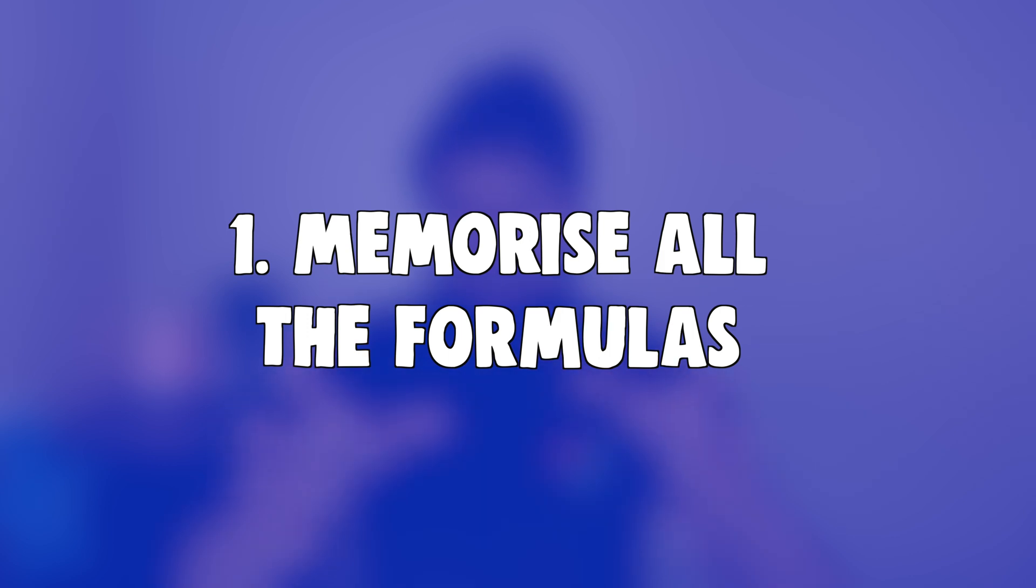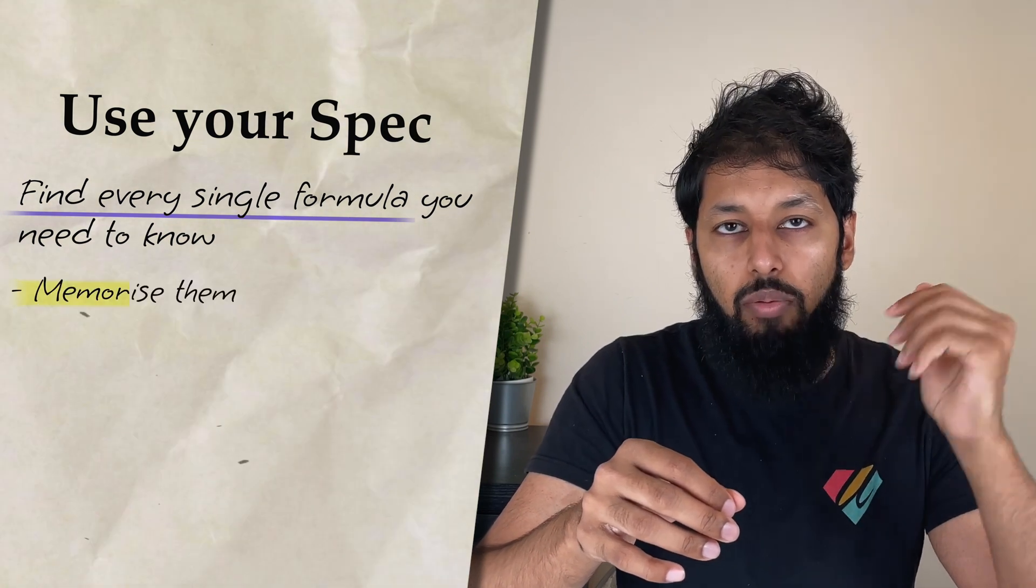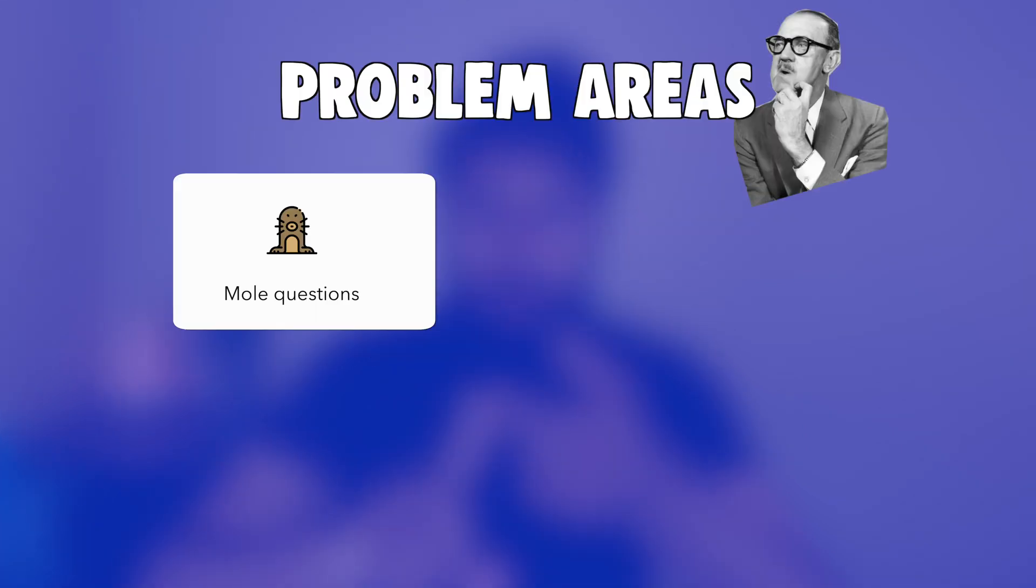In this video I'm going to talk to you about how to get a grade 9 in chemistry. The first thing you need to do in chemistry is memorize all the formulas. Thankfully there's not that many formulas, but there are still enough for you to memorize. So go to your spec, find every single formula that you need to know and memorize.